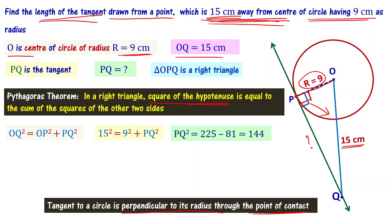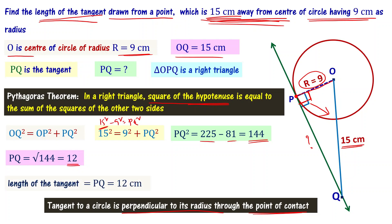Simplifying: PQ square equals 15 square minus 9 square. 15 squared is 225, 9 squared is 81, so 225 minus 81 equals 144. Therefore PQ square equals 144, and PQ equals the square root of 144, which is 12. The length of the tangent PQ is 12 centimeters.